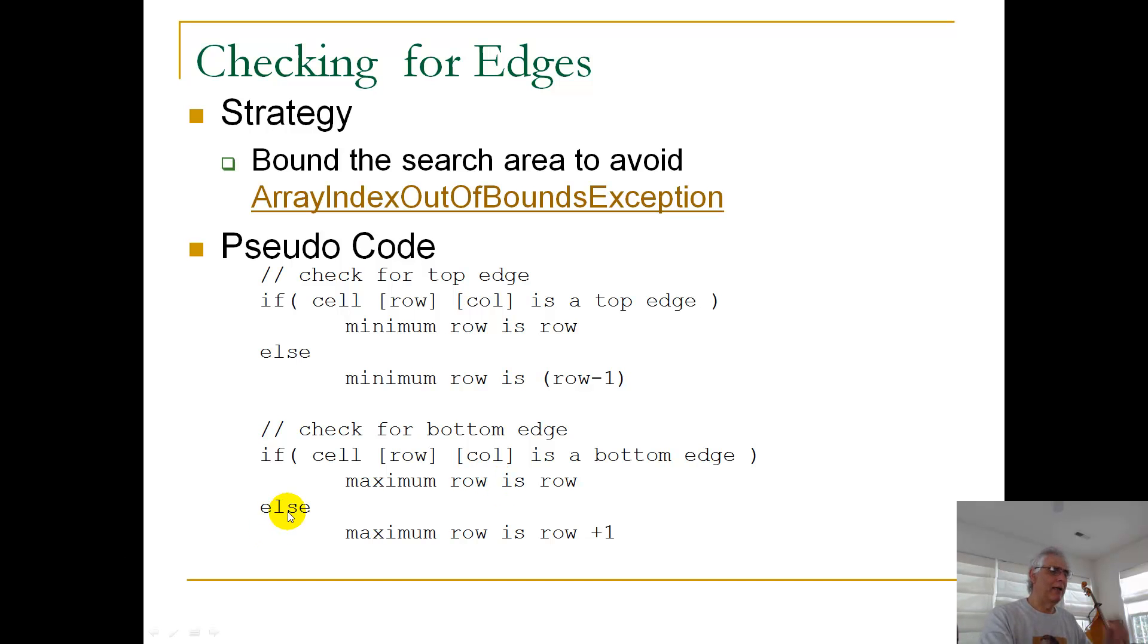Notice here the else statement. If this, when this statement is false, the else statement is, again, back to the sunny day case. Maximum row is just row plus 1.